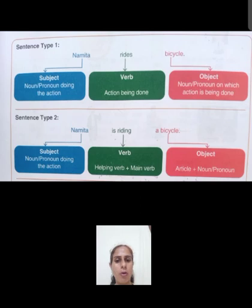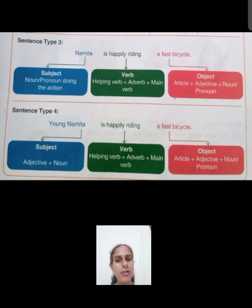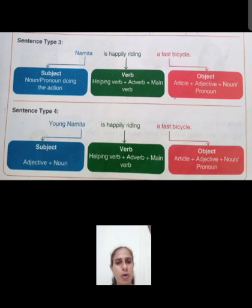Sentence type three: Namita is happily riding a fast bicycle. Subject part same hai — Namita. Verb part: helping verb plus adverb plus main verb. Beech mein 'happily' add kiya hai. Object part mein article plus adjective plus noun: 'fast' adjective add kiya hai object part mein. Namita is happily riding a fast bicycle.